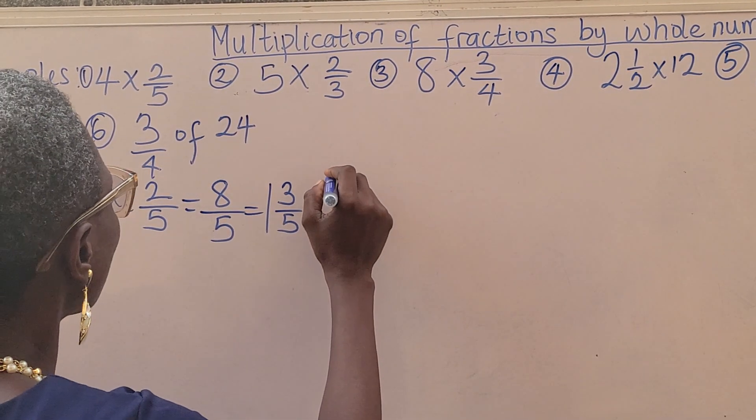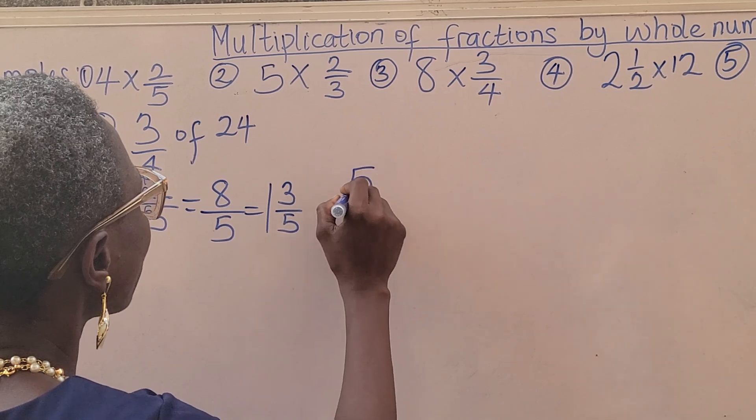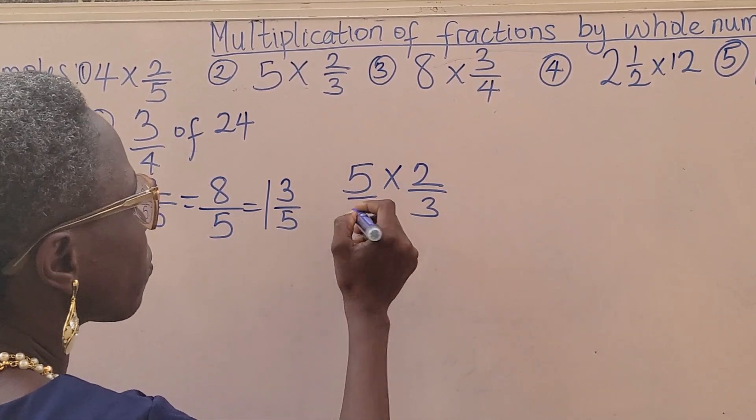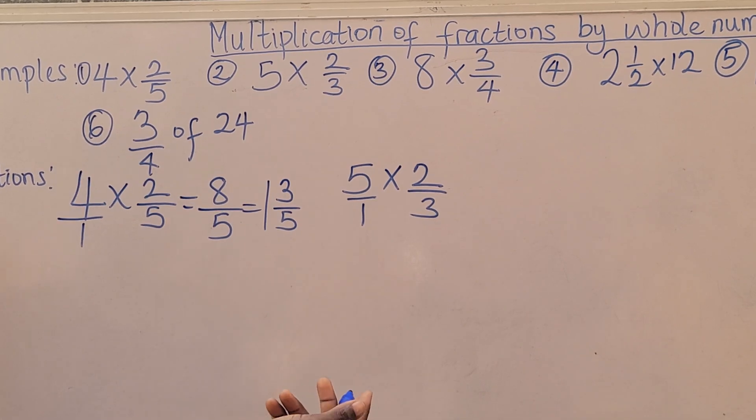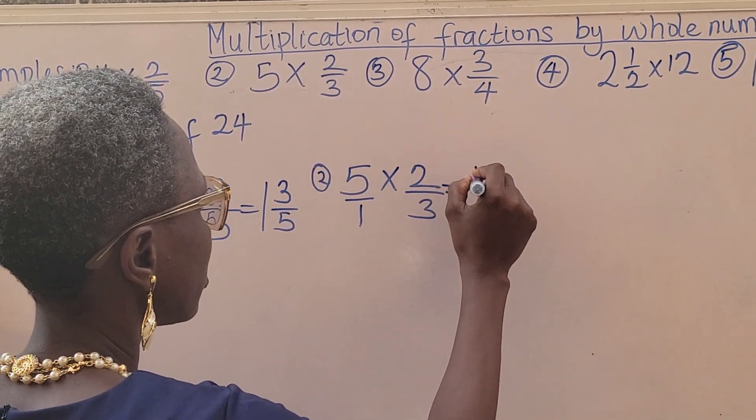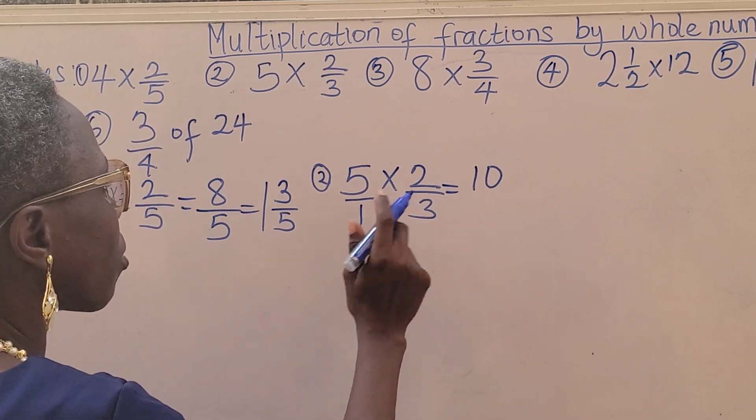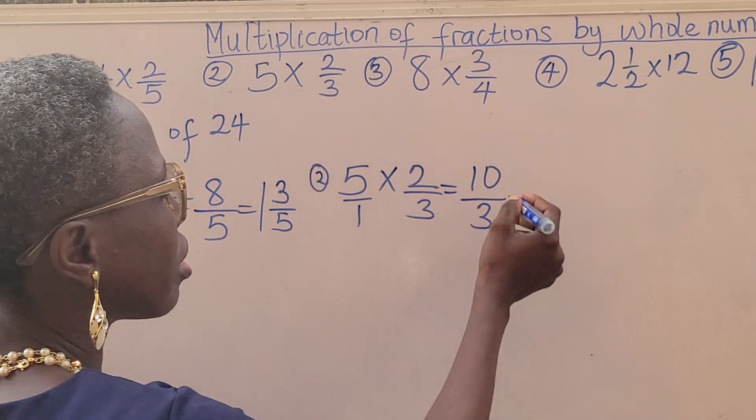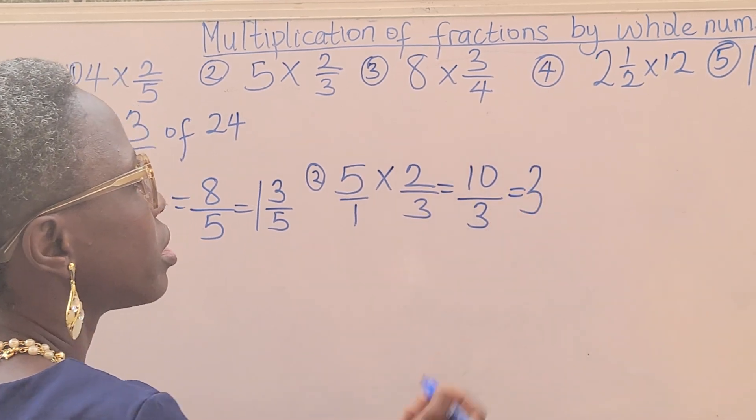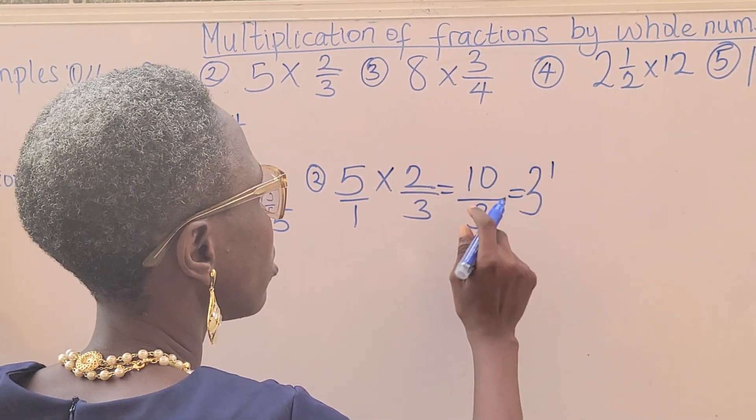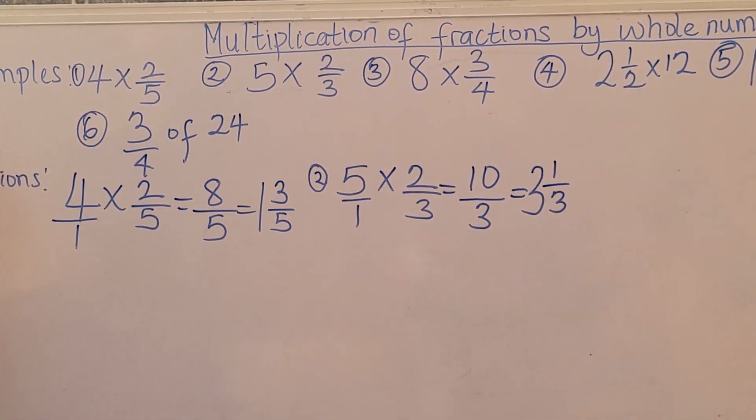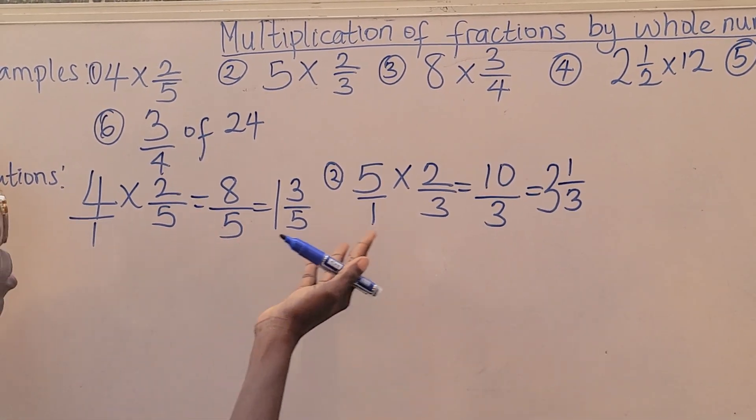Now, let's go to the second one. 5 times 2 over 3. So 5 over 1 just the way we did the other one. So we are going to be having 5 times 2, 10. 3 times 1, 3. Then you can also divide. 10 divided by 3 is 3, remaining 1 over the denominator. That's just it. Same way we did the number 1 to number 2.